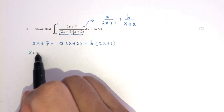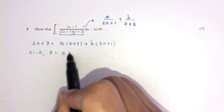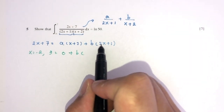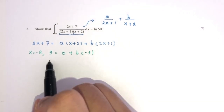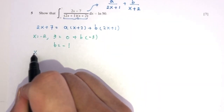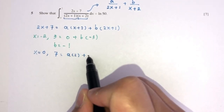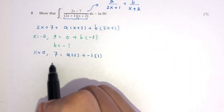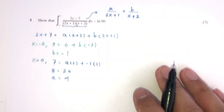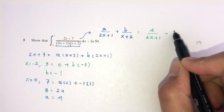Cross multiplying: 2x + 7 = A(x + 2) + B(2x + 1). Let x = −2: −4 + 7 = 3, and B(2(−2)+1) = B(−3), so B = −1. Let x = 0: 7 = 2A + B = 2A − 1, so 2A = 8, meaning A = 4. The partial fraction decomposition is 4/(2x+1) − 1/(x+2).